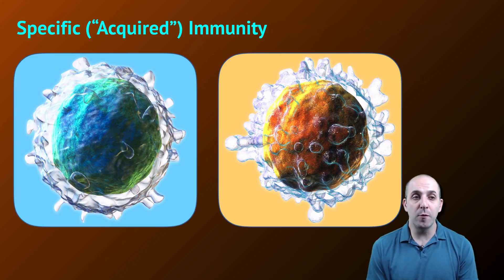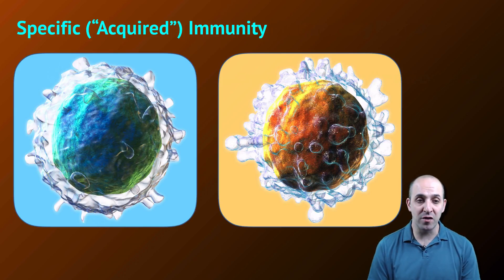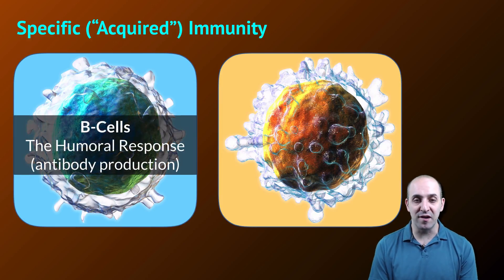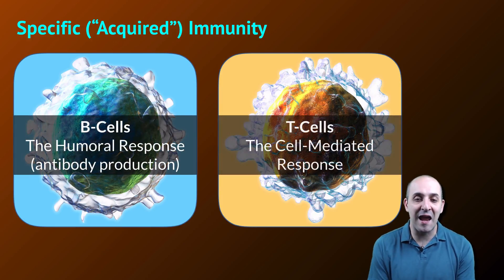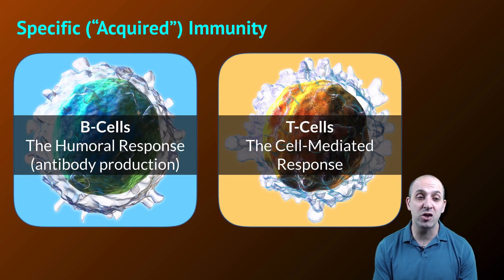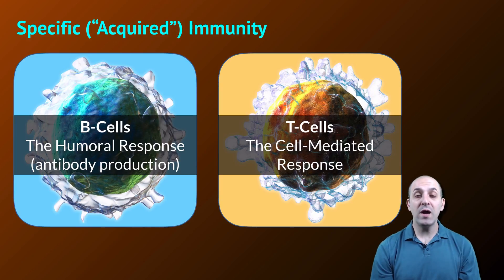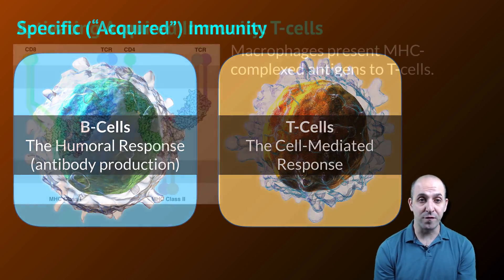The other major branch of our immune system is specific immunity — our acquired immune response. This is accomplished through the action of lymphocytes, and there are two types: B cells and T cells. B cells are responsible for the production of antibodies in what's known as the humoral response. T cells are responsible for the cell-mediated response. We're actually going to look at these in reverse order, starting with T cells first.